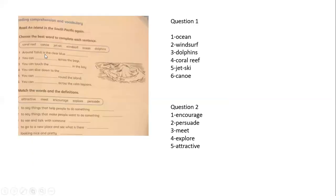Now let's move to this question. According to the text, we have coral reef, canoe, jet ski, windsurf, ocean, and dolphins. Around Tahiti Island in the clear blue ocean, you can bounce over across the waves. You can touch the dolphins in the bay. You can dive down to see a coral reef. You can jet ski around the island. You can canoe across the calm lagoon.